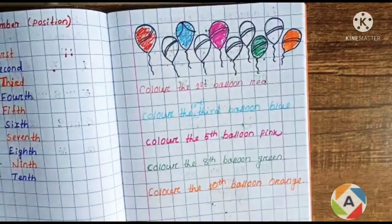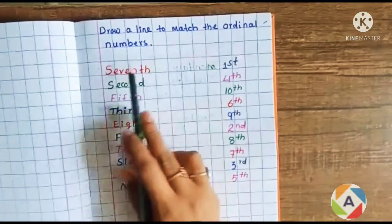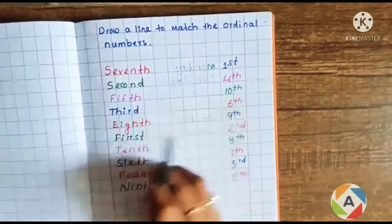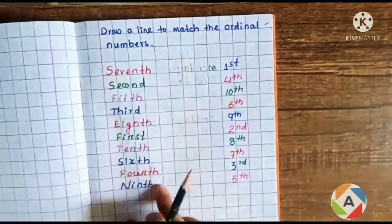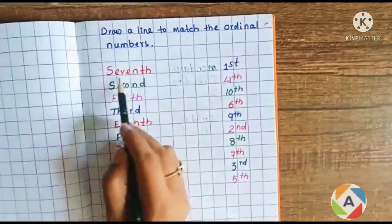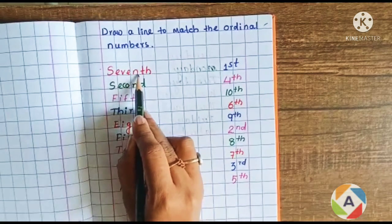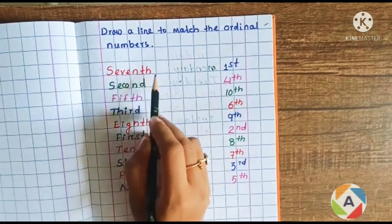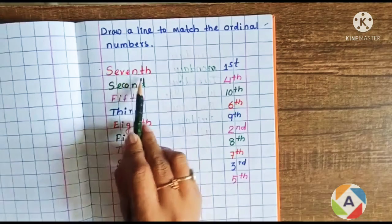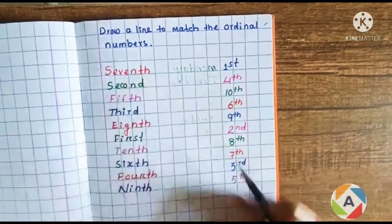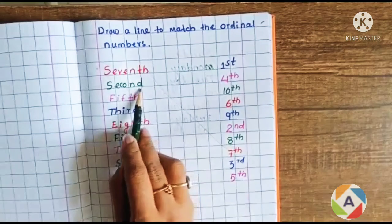So, this is a worksheet — draw a line to match the ordinal numbers. Children need to match 7th with 7th. This is 7th and you need to match it with 7th. Okay, then second — you need to match second with second.